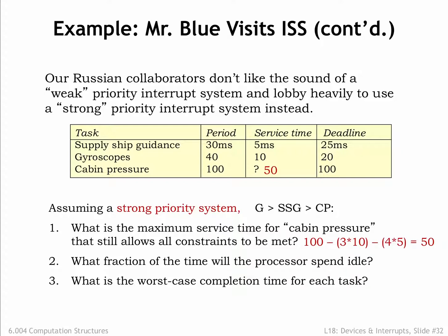Question 2: what fraction of the time will the processor spend idle? Assuming a 50ms service time for CP, it now consumes 50% of the CPU. The other request loads are as before, so 91.67% of the CPU cycles will be spent servicing requests, leaving 8.33% of idle time.